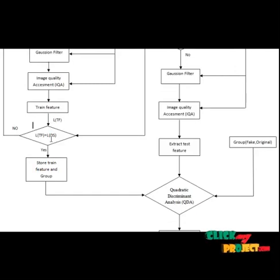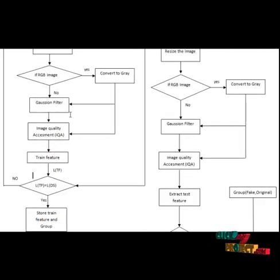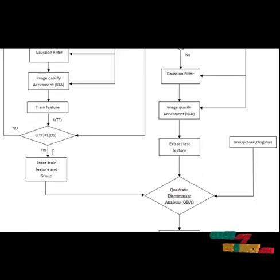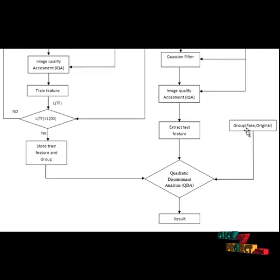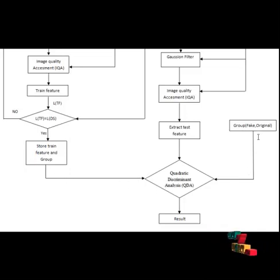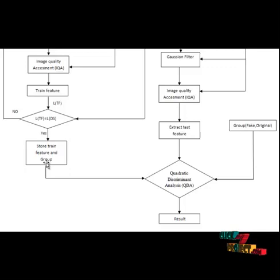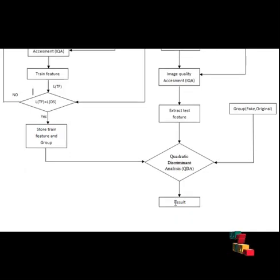We check the length of the train feature. If it is not equal to the dataset length, it loads another dataset image. Once equal to the dataset length, the train feature and group are stored. There are two groups: FAC (the non-authenticated person) and Original (the authenticated person). The stored train feature and group go to the classifier. The classifier trains on the train feature compared to the group, and then the test feature is compared to the train feature to give the result — FAC or Original.